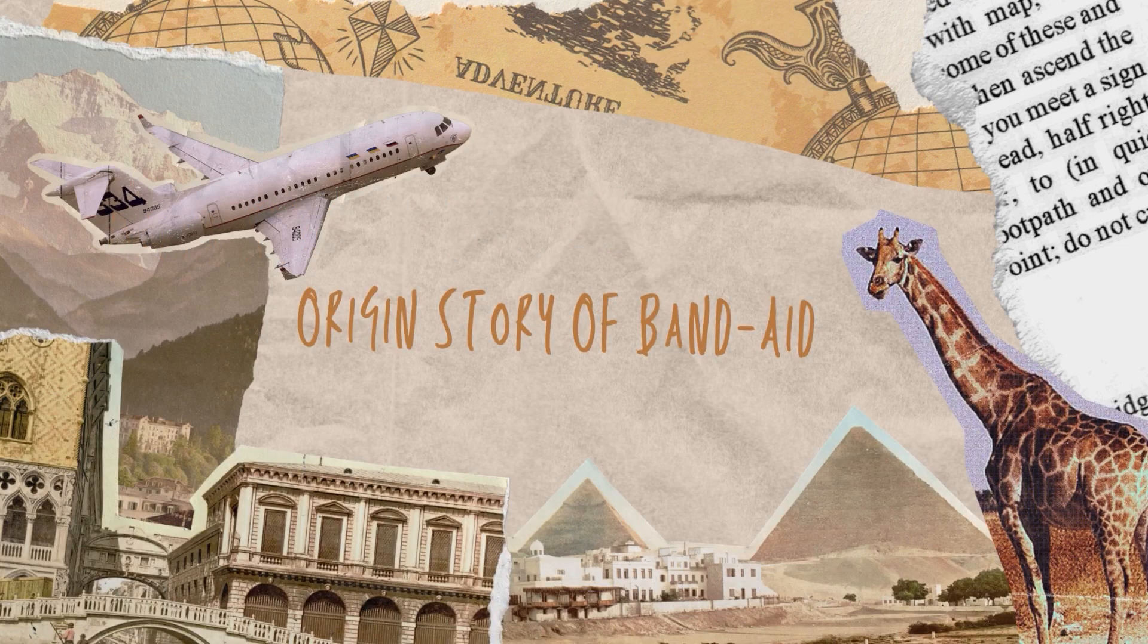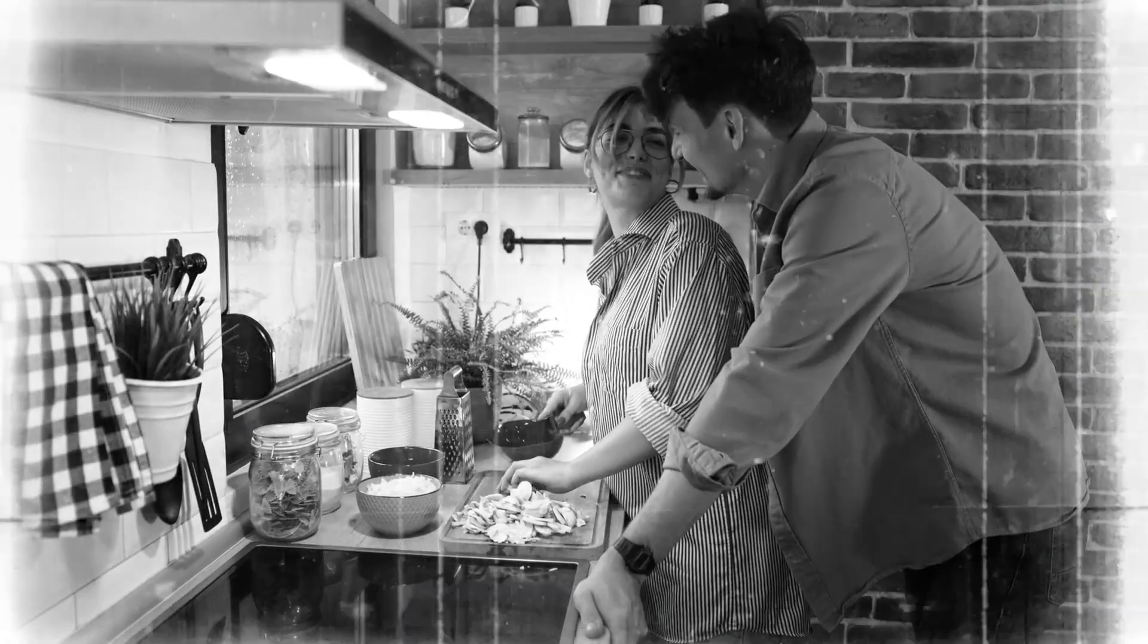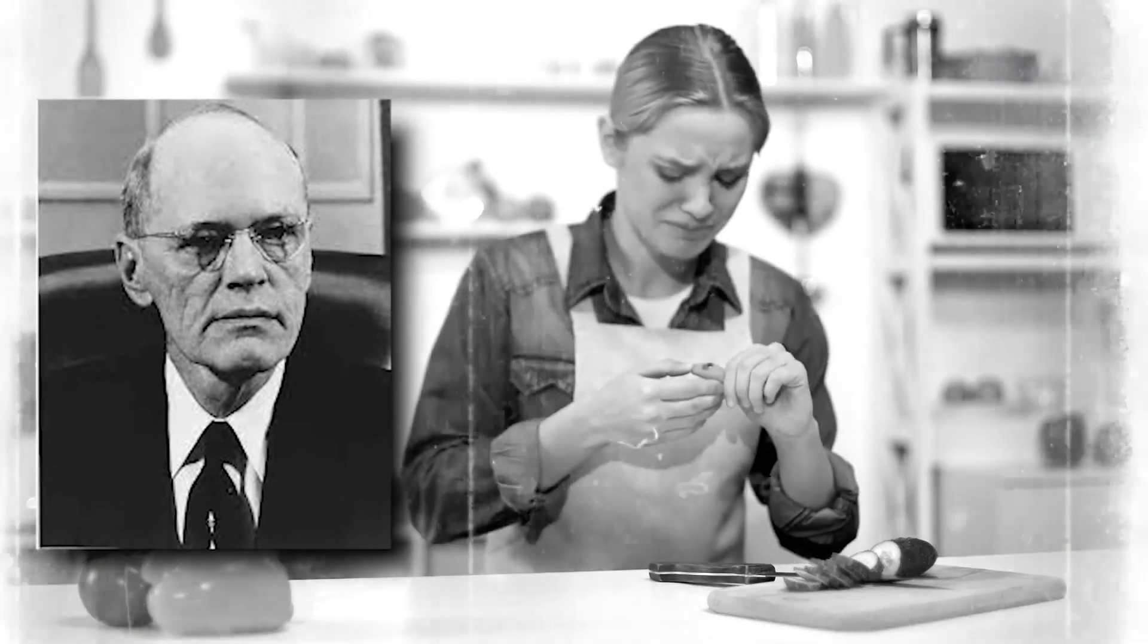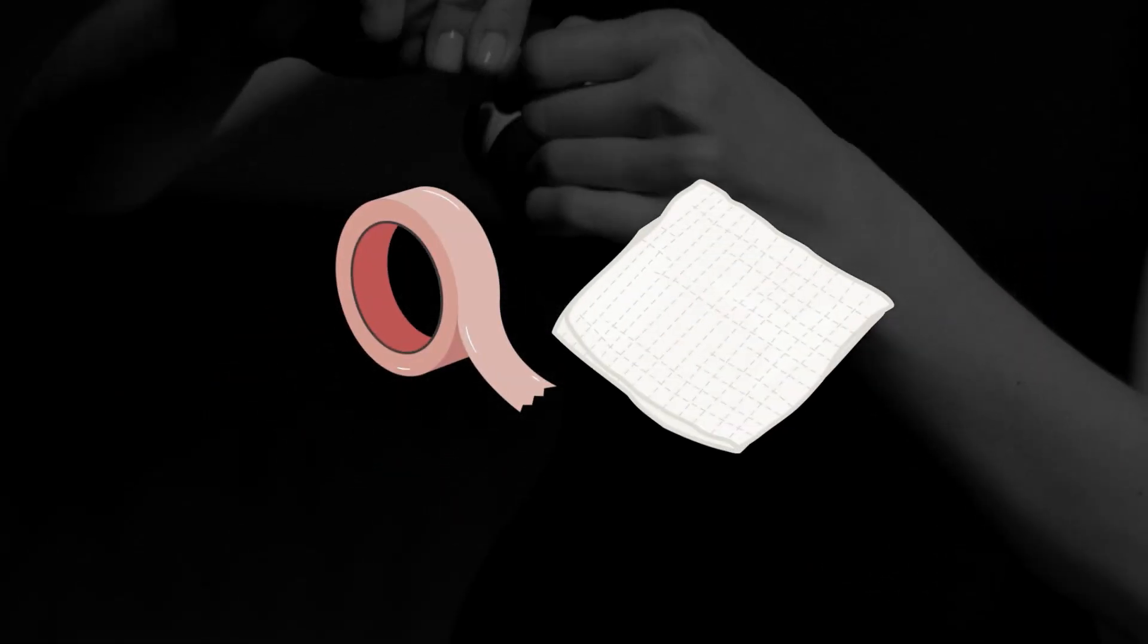Origin story of Band-Aid. According to company folklore, the Band-Aid was created one evening at the house of a Johnson & Johnson cotton buyer. In 1920, Earl Dixon observed his clumsy wife Josephine struggling to bandage her wound following another kitchen disaster. Dixon devised a method allowing his wife to care for her own wounds by combining two Johnson & Johnson items.